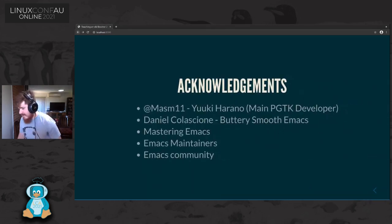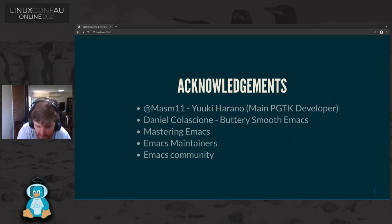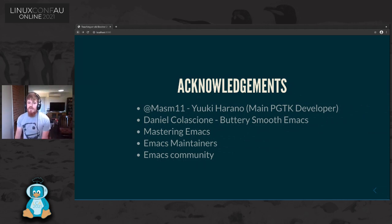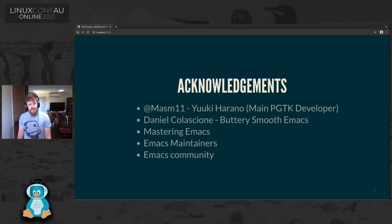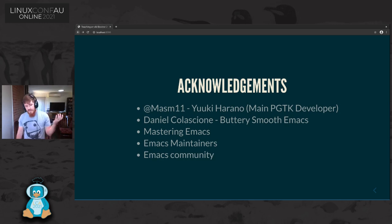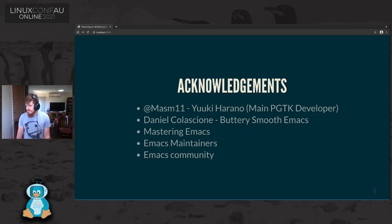With that, I'd like to acknowledge a couple of people. Yuki Hirano, who's been the main developer and wrote most of those 16,000 lines of code — possibly much more; I squashed a lot in the rewrite. Buttery Smooth Emacs, if you want a hilarious take on the state of redisplay in 2016 when Daniel tried to port double buffering to it. If you want to look at features in Emacs 27.1, check out Mastering Emacs. And of course, thank you to the developers, the maintainers, and the rest of the Emacs community. Thank you very much.